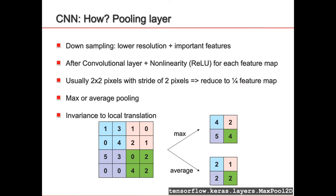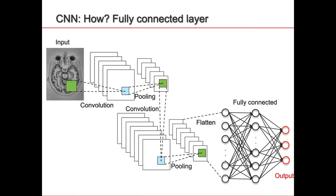After all the convolutional and pooling layers, we have the fully connected layer — just like a normal neural network. After several layers of convolution and pooling, we obtain a number of feature maps, which we flatten into a vector of neurons, and then continue with a normal neural network to the output. Then we perform backpropagation and gradient descent to train the model.